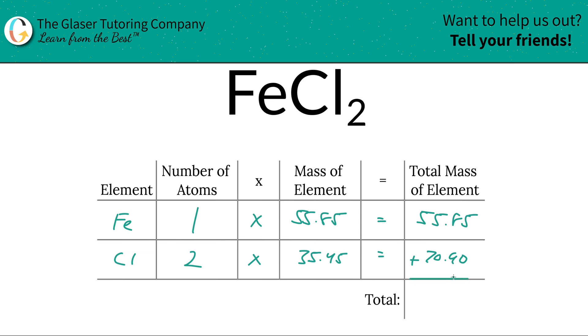To find the total mass of the entire compound is very simple. Just add up this column and that works out to be 126.75. And the units here are in terms of AMU, atomic mass units, since we're finding molecular mass.